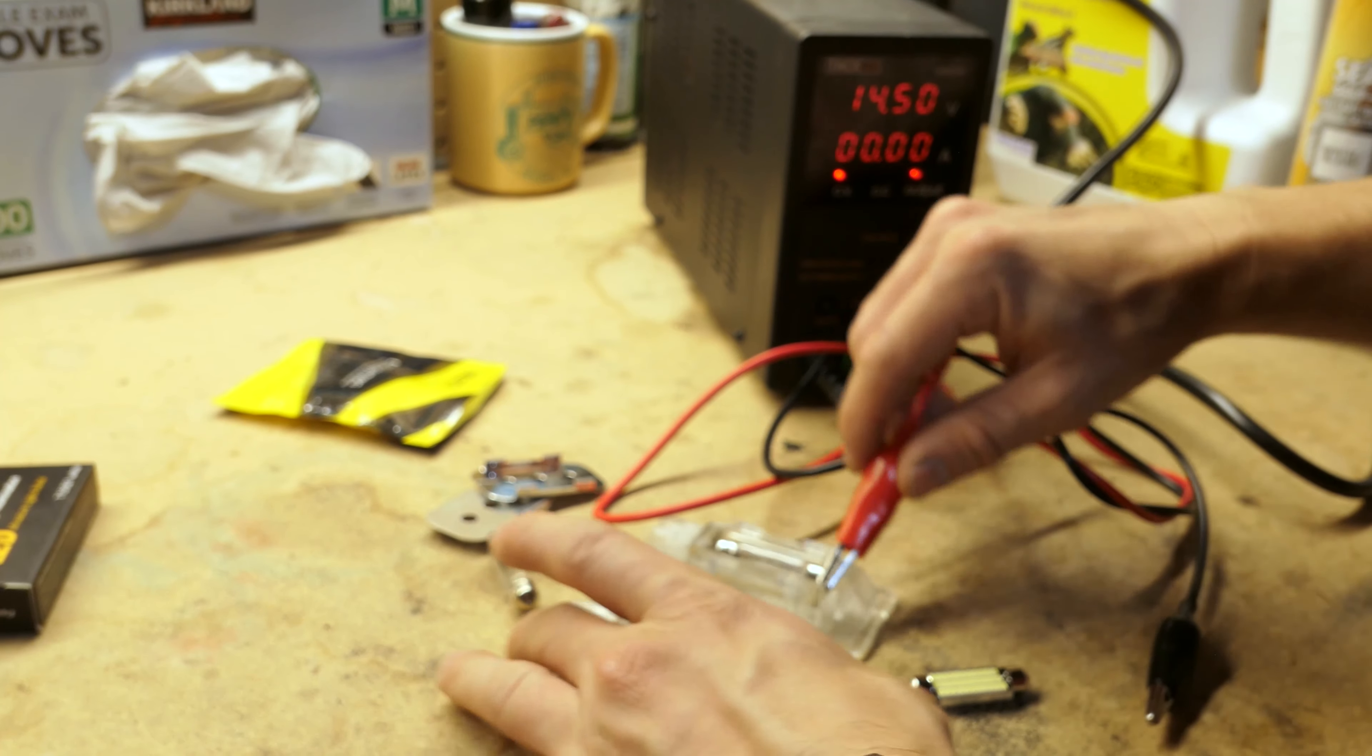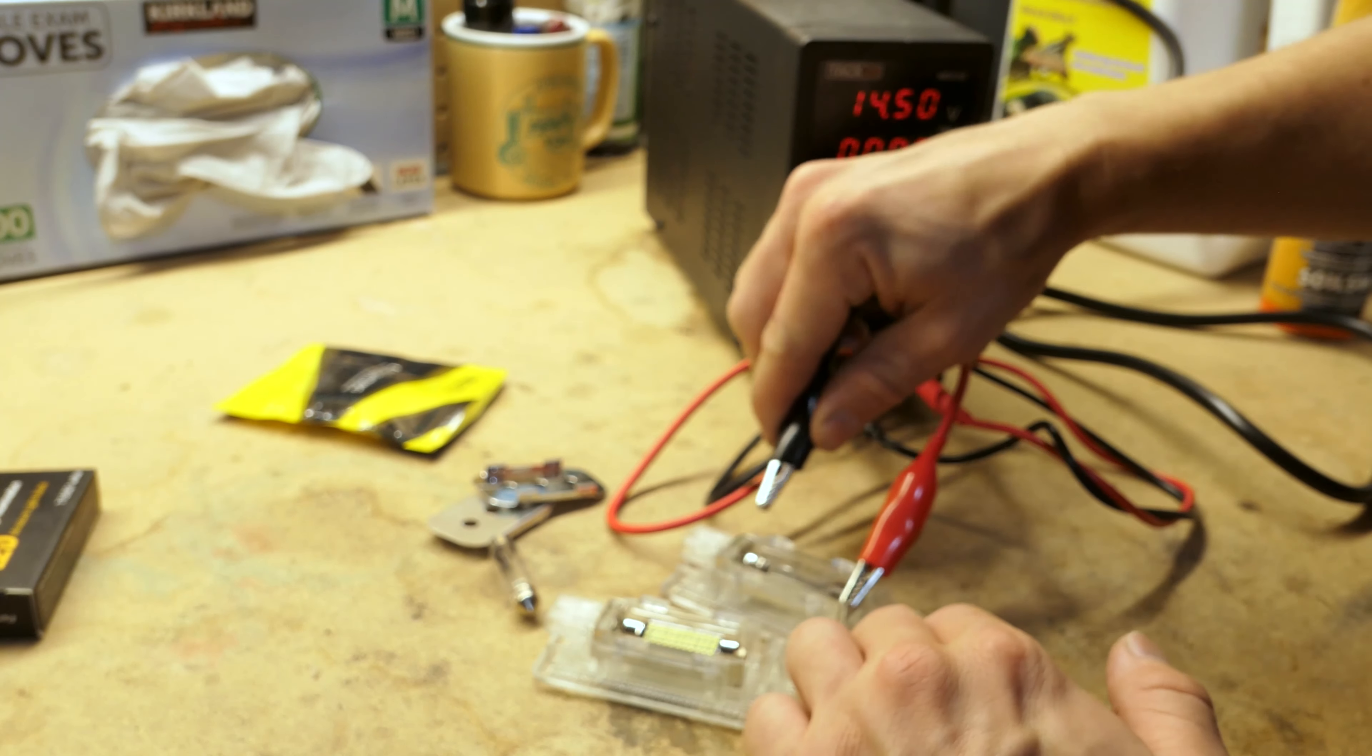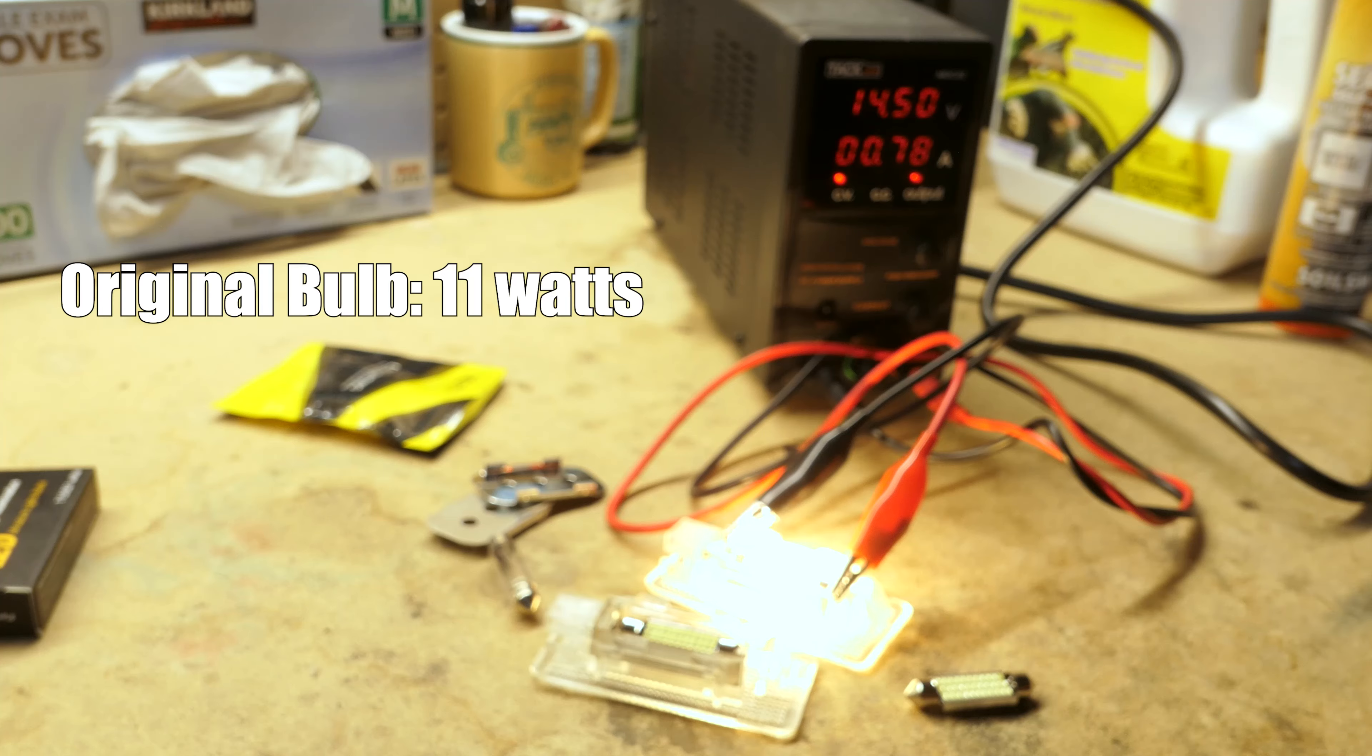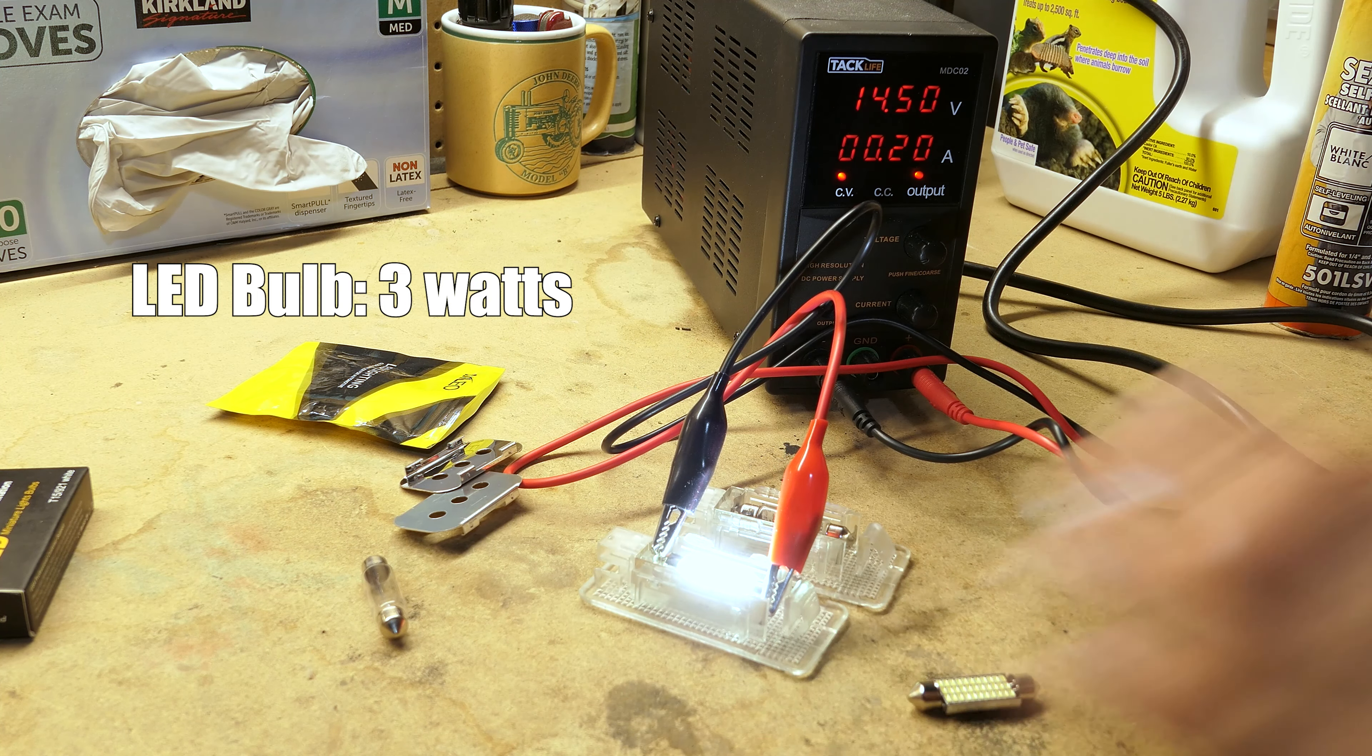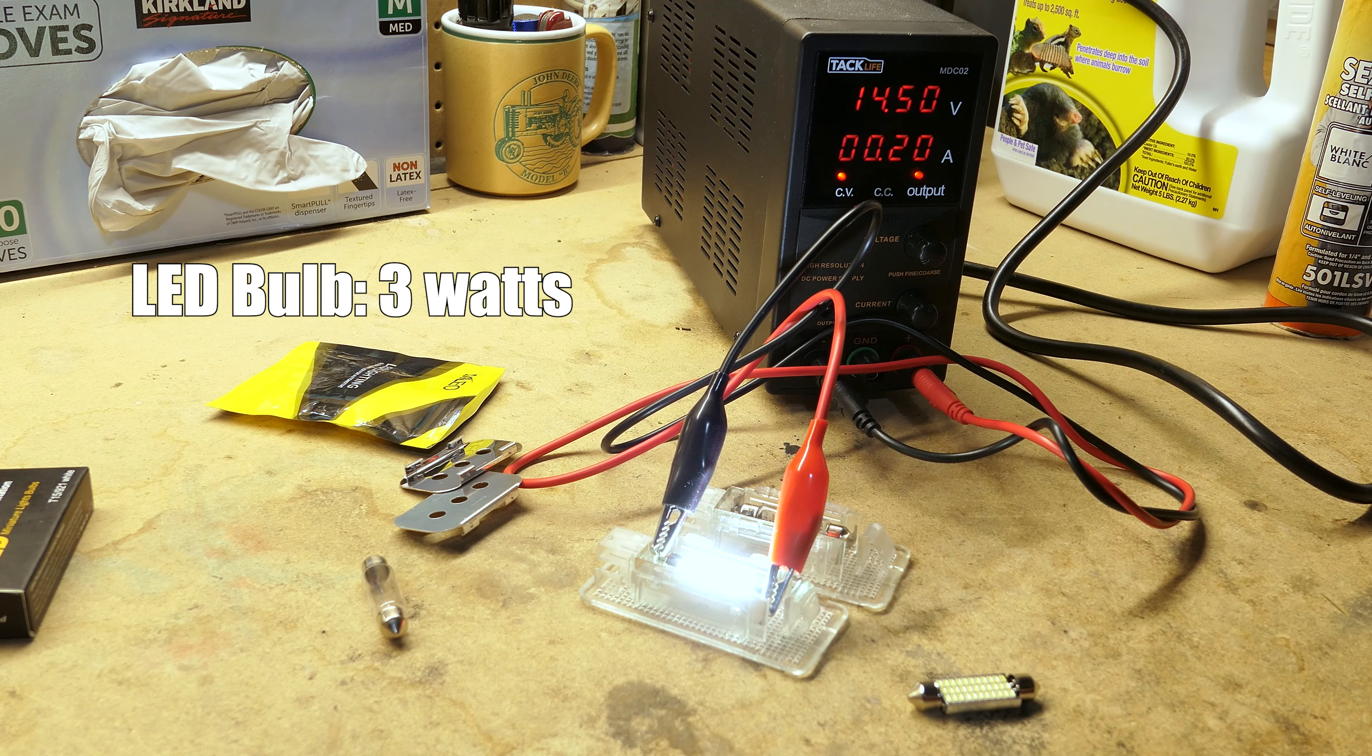Let's do a quick wattage test and voltage times amps will give us the wattage and the original bulb is around 11 watts and the LED bulb is only about 3 watts. It's a pretty big difference.